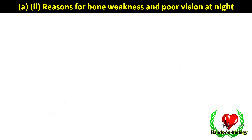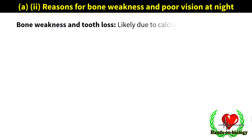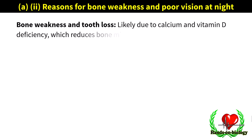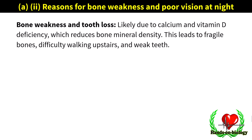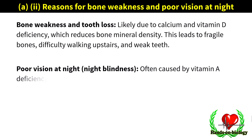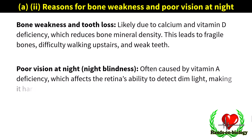Reasons for bone weakness and tooth loss: likely due to calcium and vitamin D deficiency, which reduces bone mineral density, leading to fragile bones, difficulty walking upstairs, and weak teeth. Poor vision at night — night blindness — is often caused by vitamin A deficiency, which affects the retina's ability to detect dim light, making it hard to see in low light conditions.